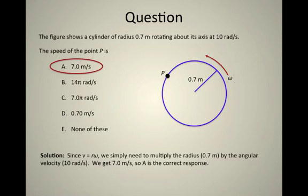We have to remember that there's always a connection between the linear equations of motion and the angular equations of motion. In this case, v is equal to r omega.